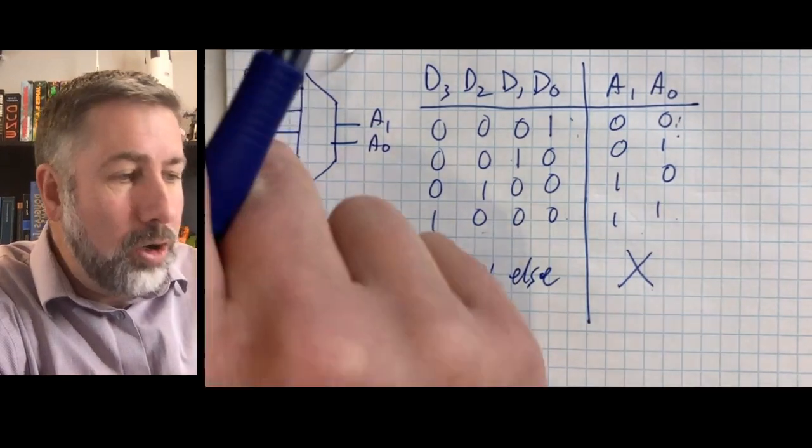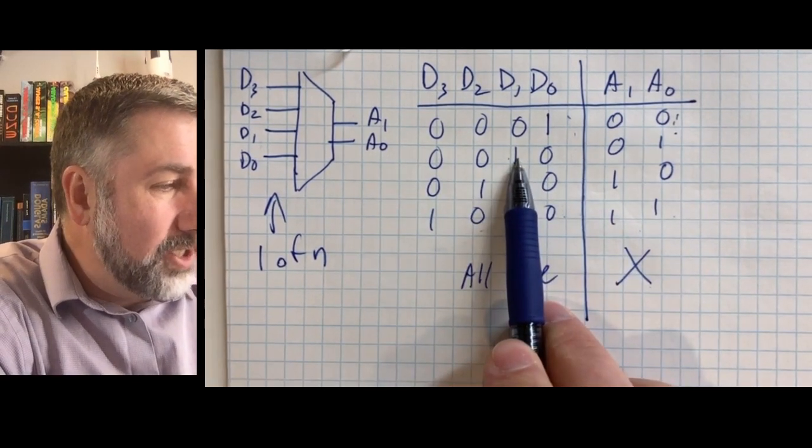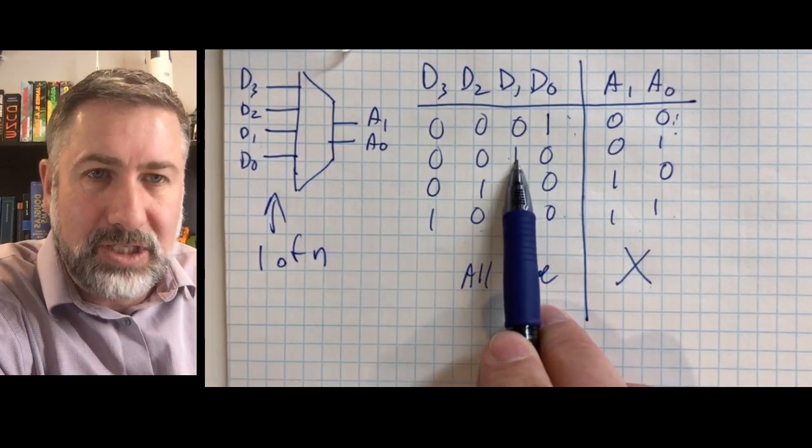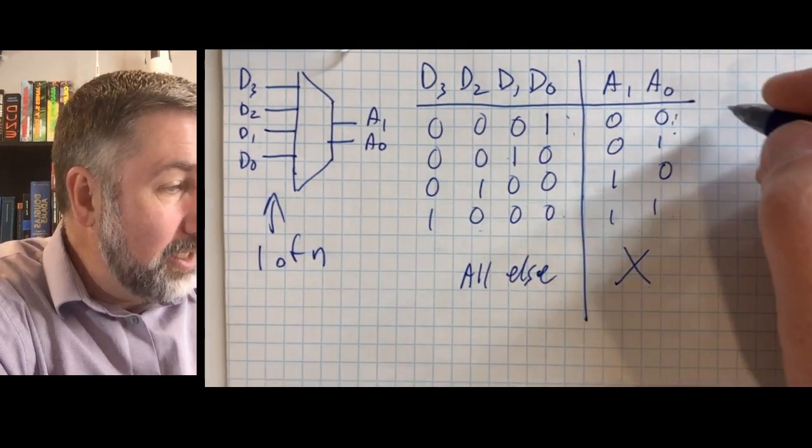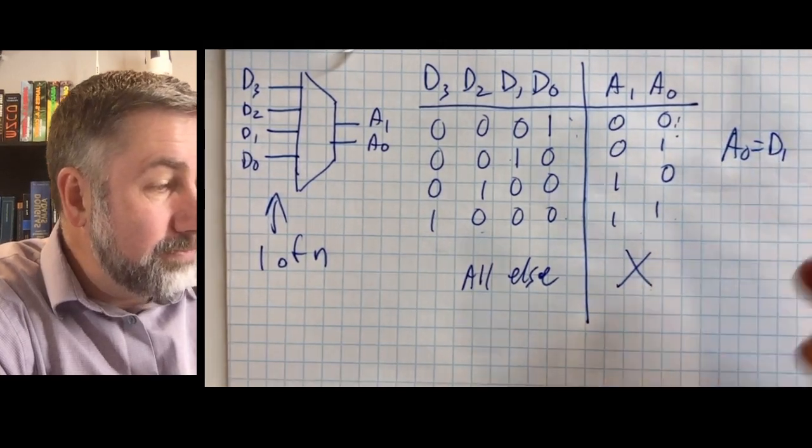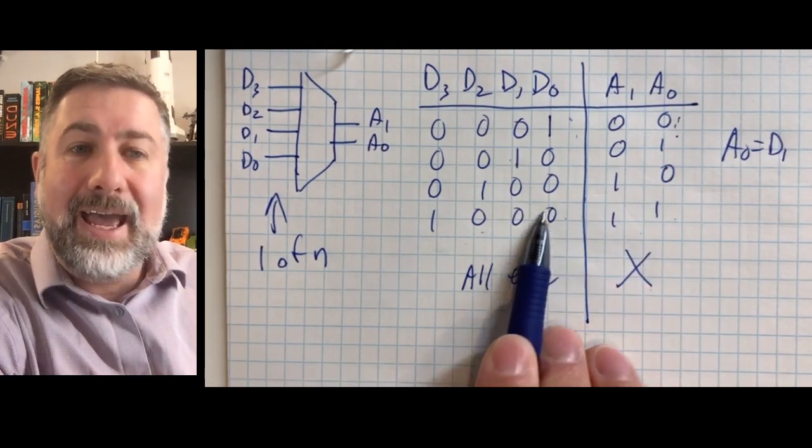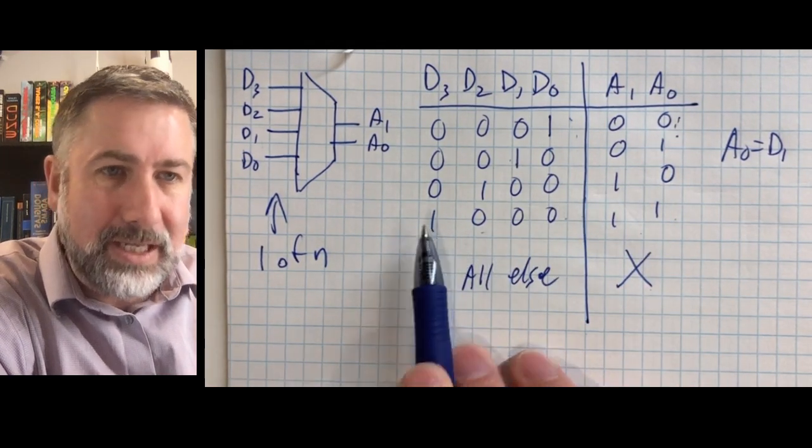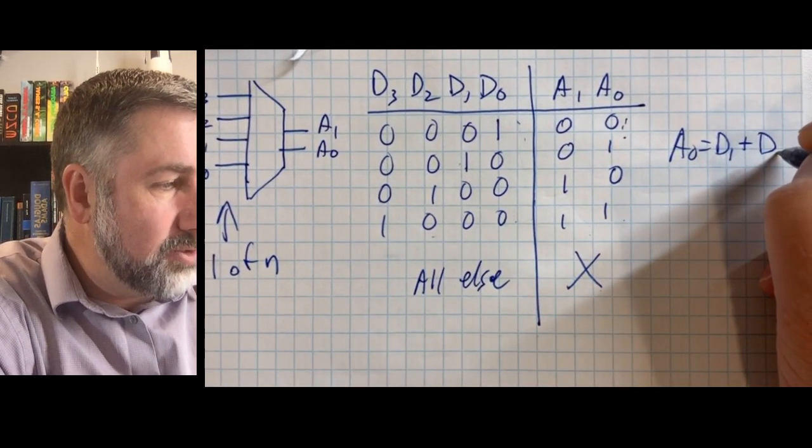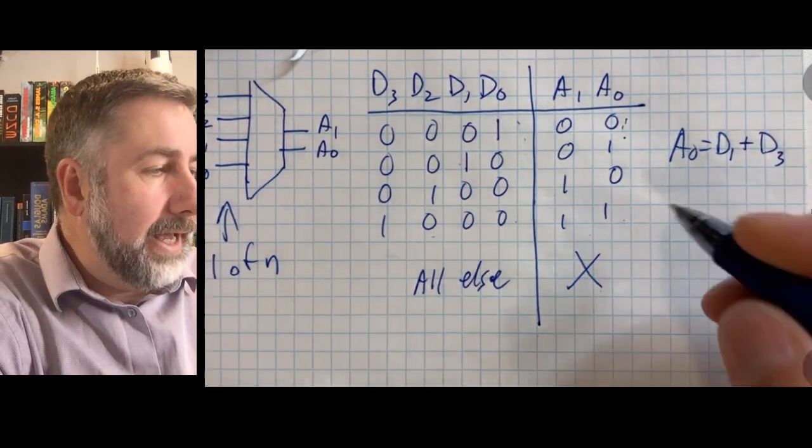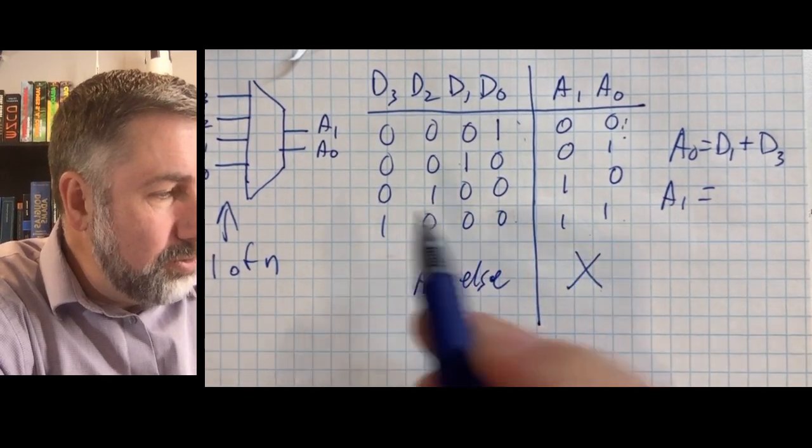For an encoder to work, only one pin can be active. So we don't care what happens if D1 is 1. The only situation where D1 is 1 is when the other inputs are 0, and so we can say A0 equals D1. If D1 is active, we need A0 to be 1. And it can also be active if D3 is active. So A0 is D1 or D3, and A1 similarly will only be true if D2 or D3 is true.